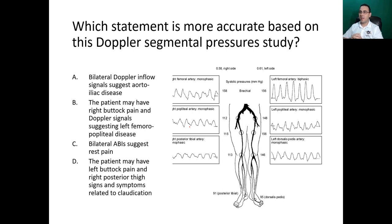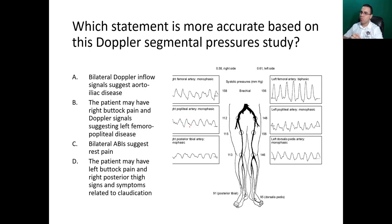Which statement is most accurate based on this Doppler segmental pressure study? A — bilateral abnormal inflow signals suggest aortoiliac disease. B — the patient may have right buttock pain and Doppler signals suggesting left femoral-popliteal disease. C — bilateral ABIs suggest rest pain. D — the patient may have left buttock pain and right posterior thigh signs related to claudication. Take a few seconds to observe what's going on.